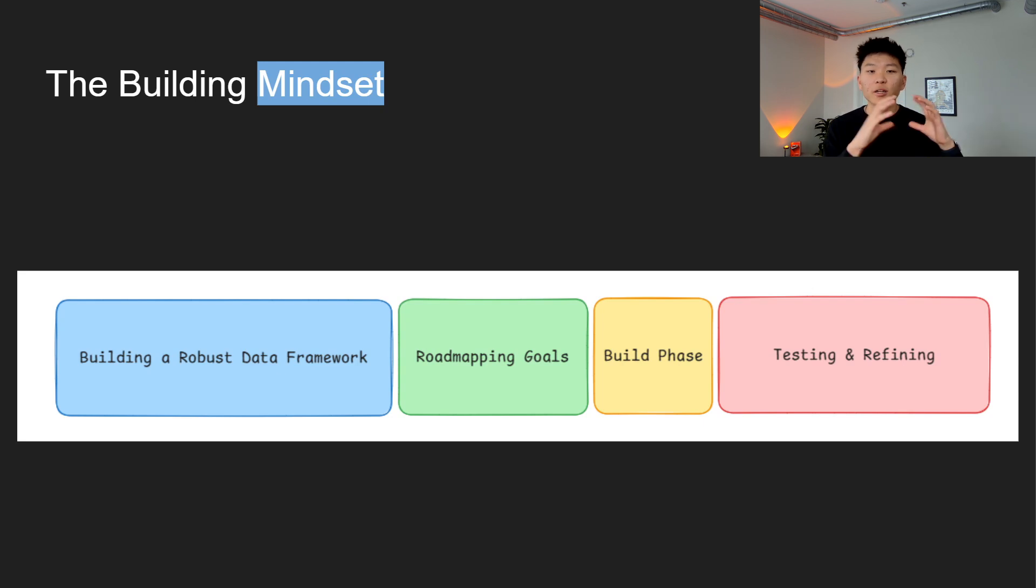Then we move into the build phase, which won't take as long if you have all your data in place and you have goals. So this is where you can actually get into N8N, start dragging and dropping tools around, plugging in workflows, assigning tools, and testing your agent's functionality. But even here, testing and iteration is key, which moves into the fourth step, testing and refining.